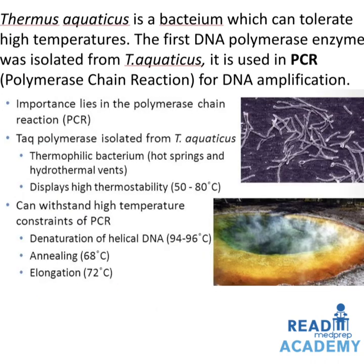Thermus aquaticus is a bacterium that can tolerate high temperatures. The first DNA polymerase enzyme was isolated from Thermus aquaticus and is used in PCR (polymerase chain reaction) for DNA amplification. Taq polymerase, isolated from this thermophilic bacterium found in hot springs and hydrothermal vents, displays high thermostability between 50–80°C, can withstand high temperature constraints of PCR, undergoes denaturation of helical DNA between 94–96°C, annealing at 68°C, and elongation at around 72°C.